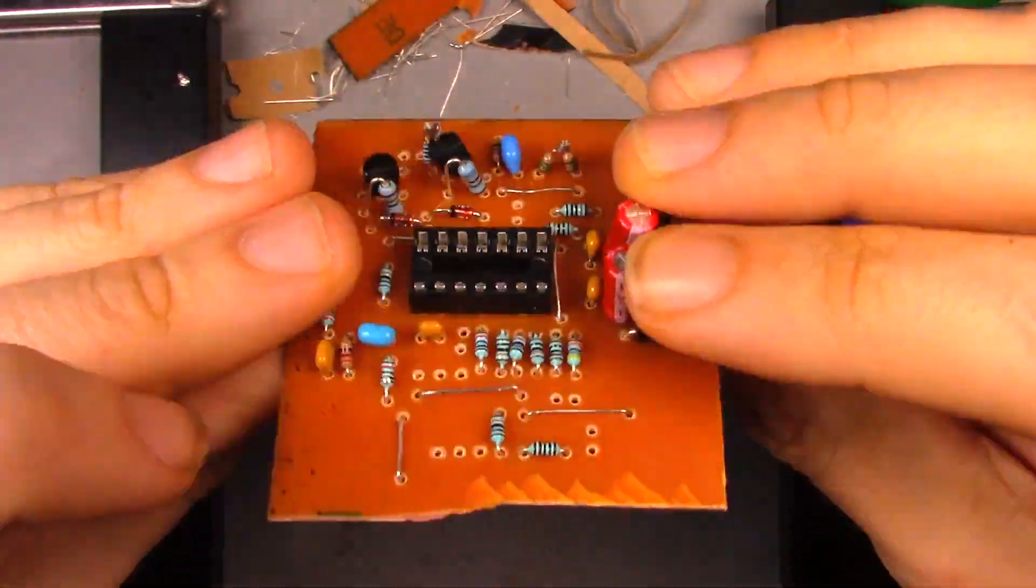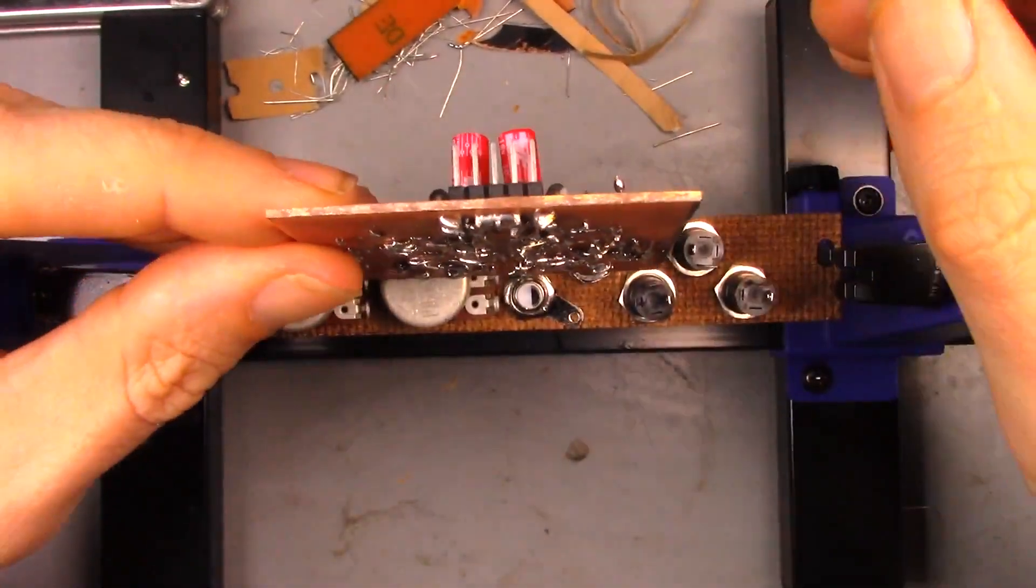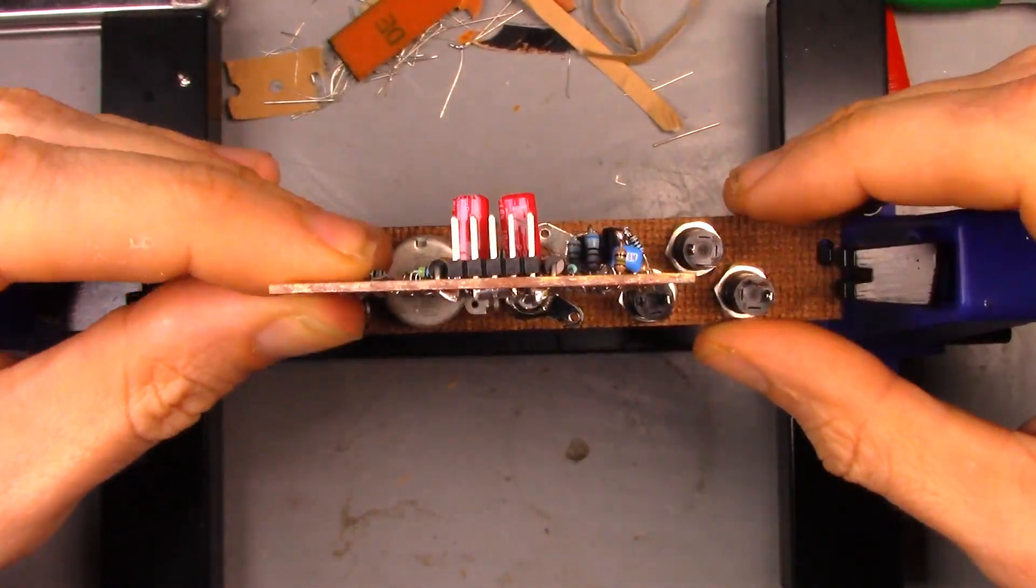The PCB will be mounted to the faceplate right about here, and now all the connections between the faceplate and the PCB can be made.